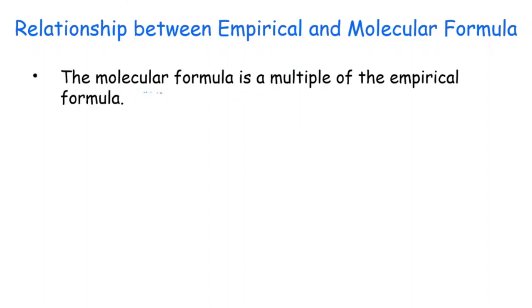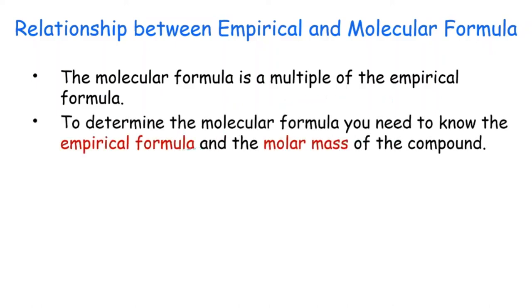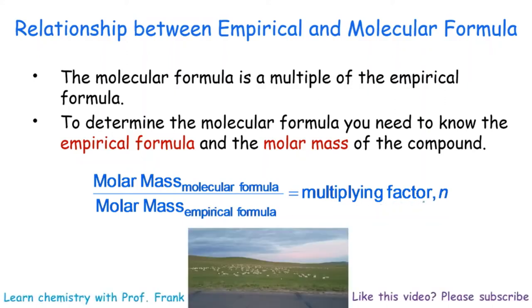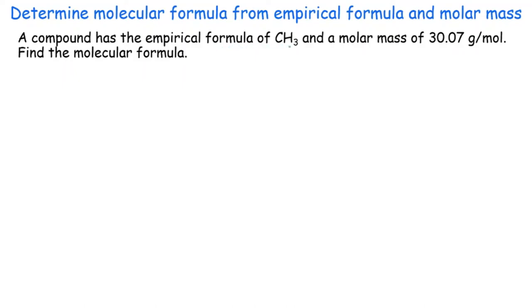Now let's talk about the relationship between empirical and molecular formula. The molecular formula is a multiple of the empirical formula. If we know the empirical formula and the molar mass, we can determine the molecular formula using the equation: n = (molar mass of molecular formula) ÷ (molar mass of empirical formula). If n = 1, then molecular formula equals empirical formula. Example: a compound has an empirical formula of CH3 and a molar mass of 30.07 g/mol — find the molecular formula.